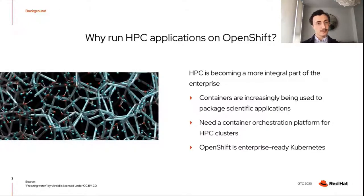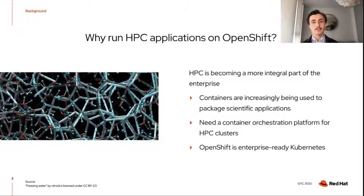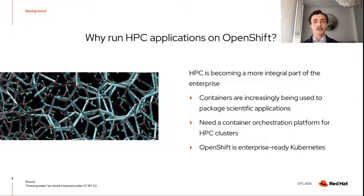In the HPC community, containers have also caught on. Containers are really helpful for packaging complex applications along with their dependencies so that they can be run in many different environments. For these containers to be useful, you need a platform to run them on, like Kubernetes. OpenShift is an enterprise-ready Kubernetes platform for the hybrid cloud, and this proof of concept aims to show how HPC applications can be effectively deployed on OpenShift.